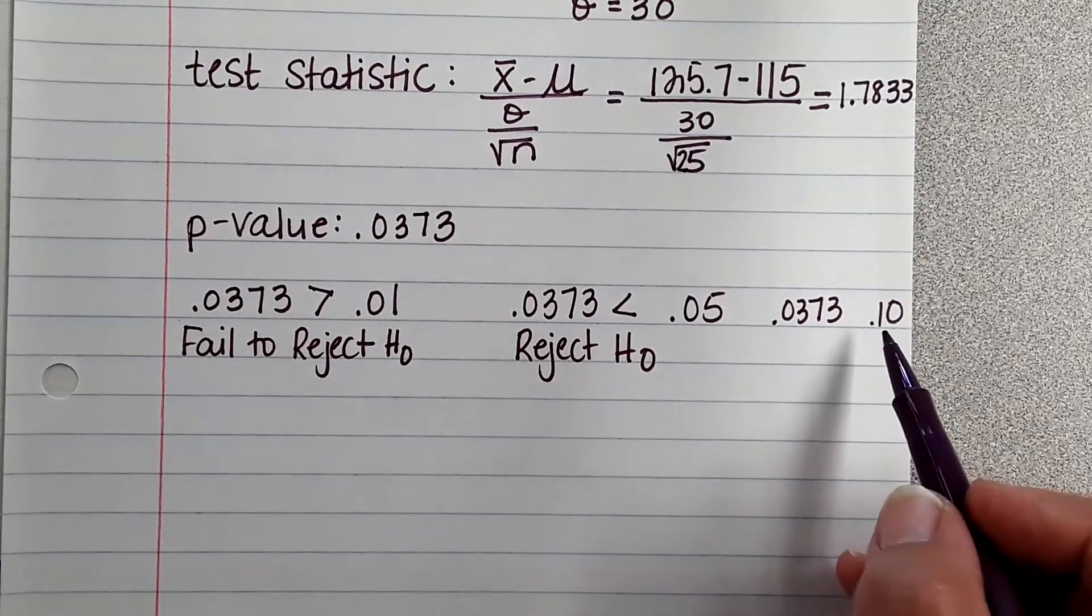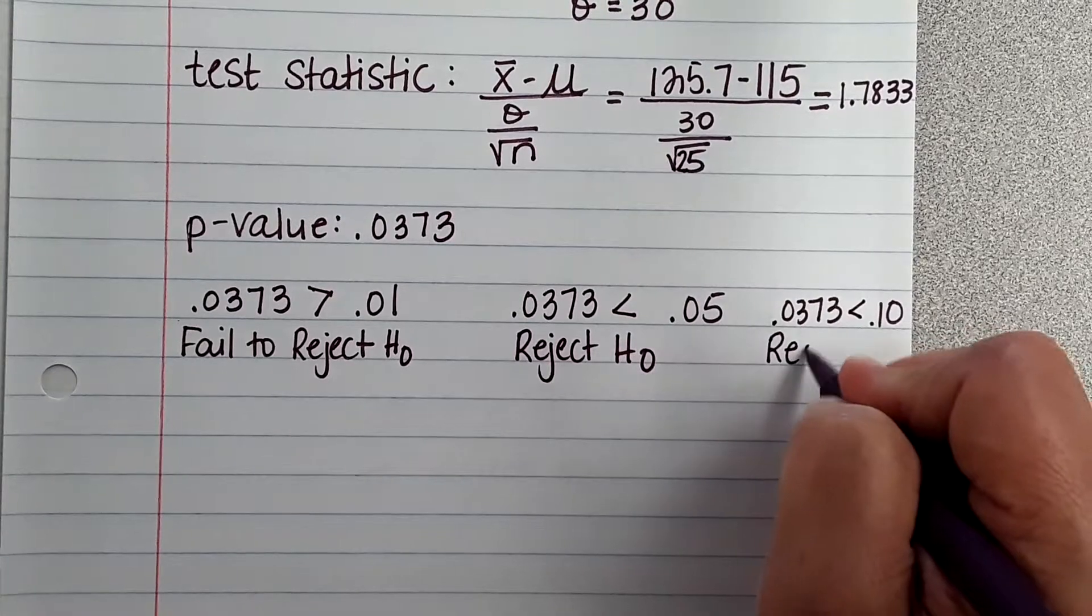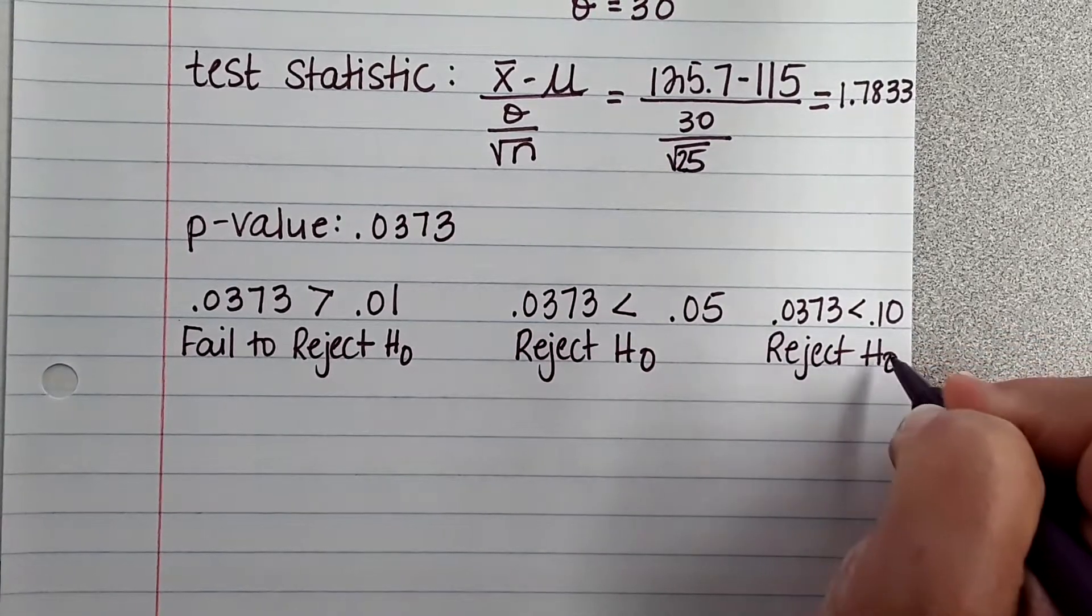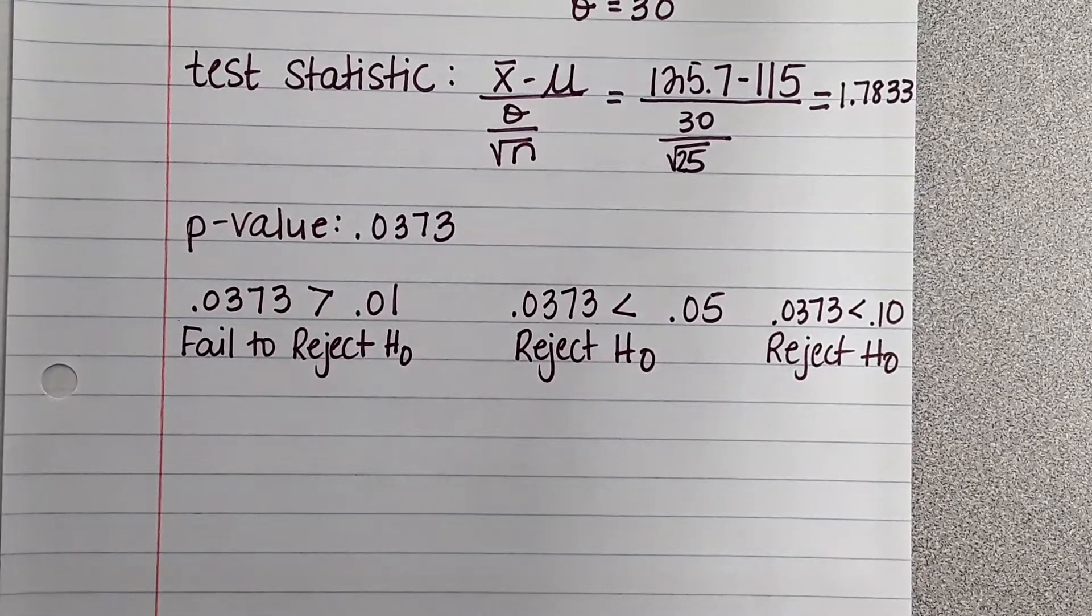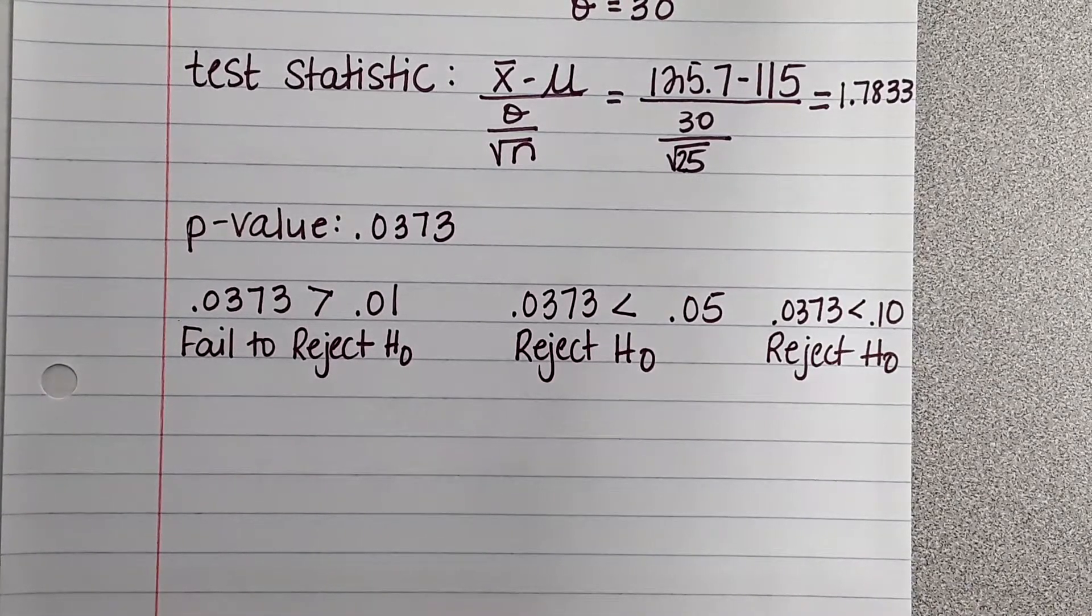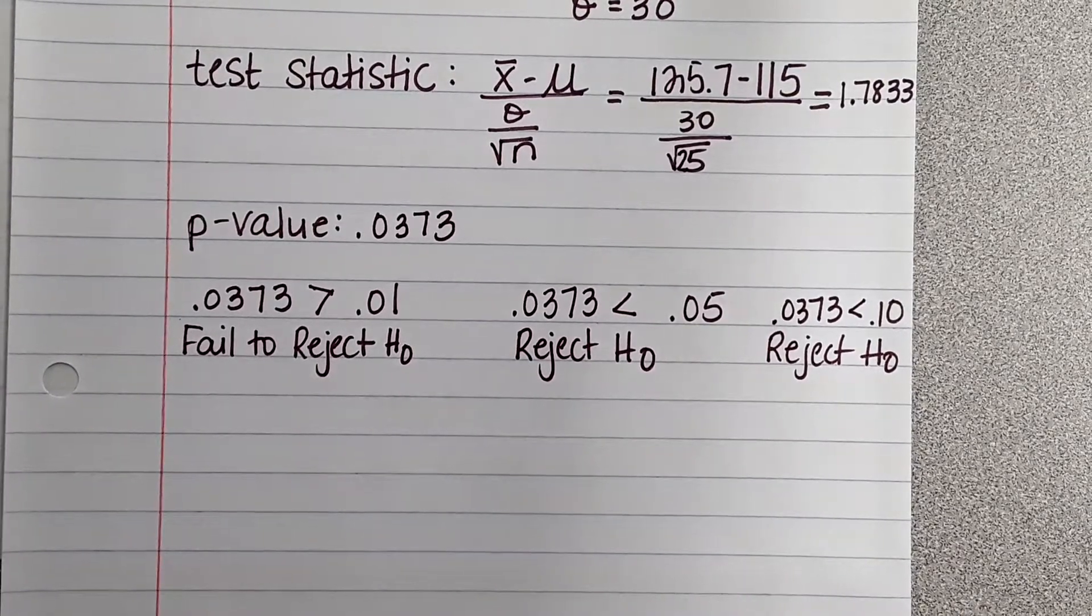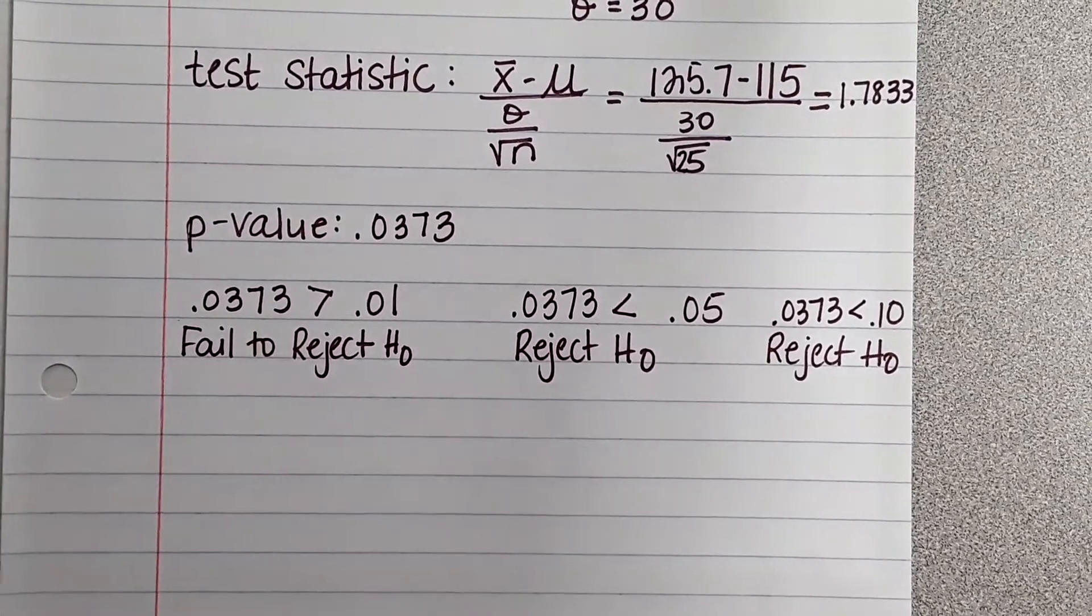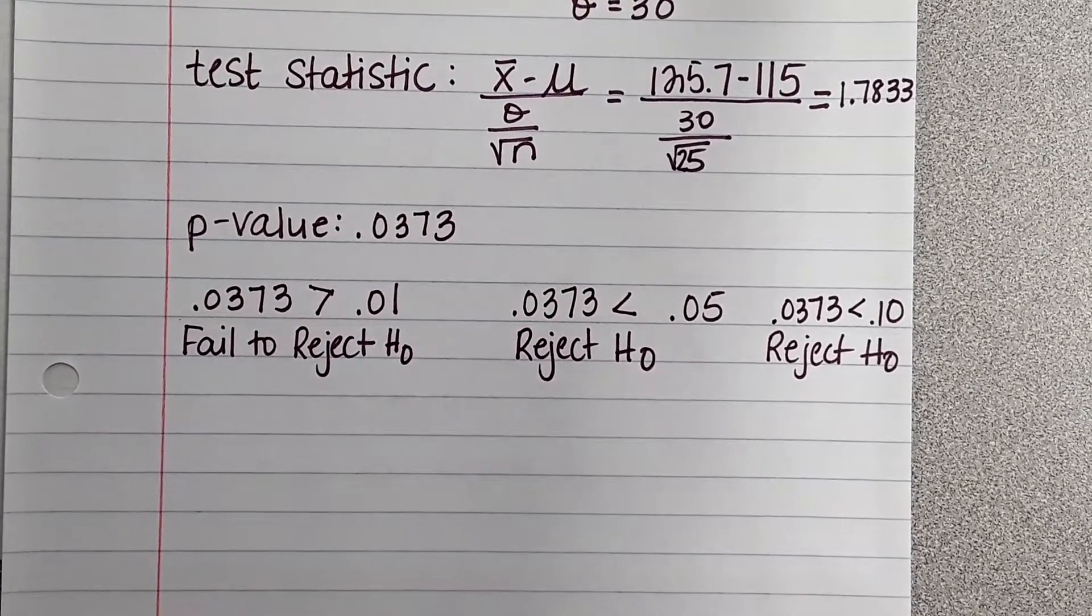And what about the 10% level? Is it greater than or less than? So here, we would also reject. This is why it's important to have that significance level picked before you make a decision, right? Let's say you didn't have a significance level and you really didn't like what this woman was saying, which you could change your mind, right?